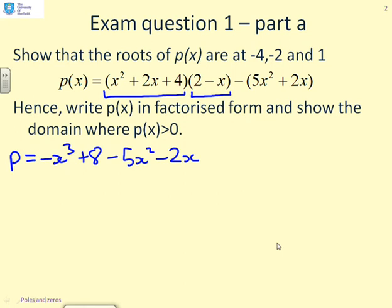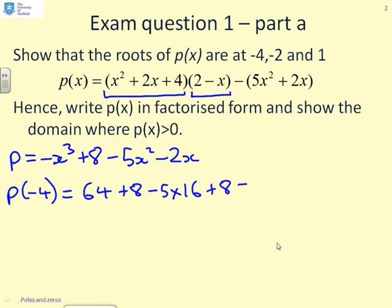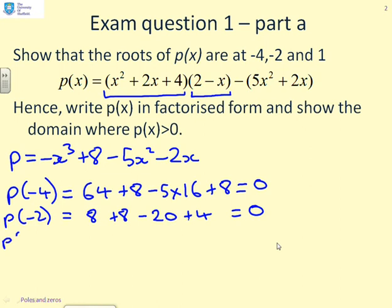So there's my polynomial in a simplified form. Now the question asks to show that the roots are at minus 4, minus 2, and 1. So all we do is simply substitute in the numbers. p(minus 4) is 64 plus 8 minus 5 times 16, which will be 80, plus 8 — and you'll see that is indeed 0. p(minus 2) is 8 plus 8 minus 20 plus 4, which again is 0. And p(1) is minus 1 plus 8 minus 5 minus 2, which again is 0.